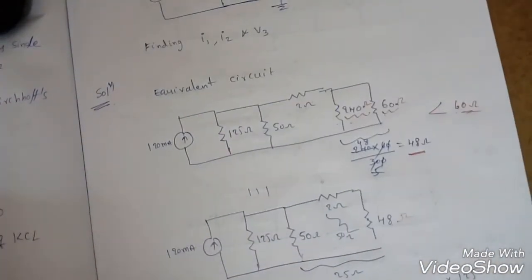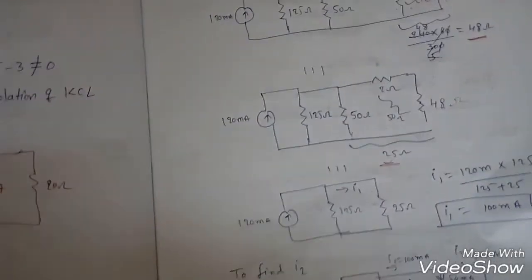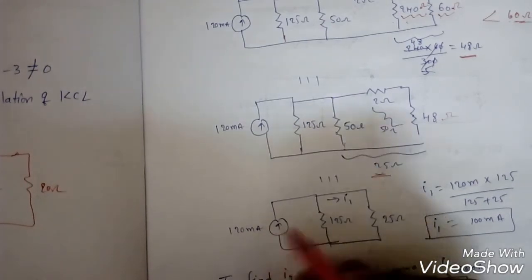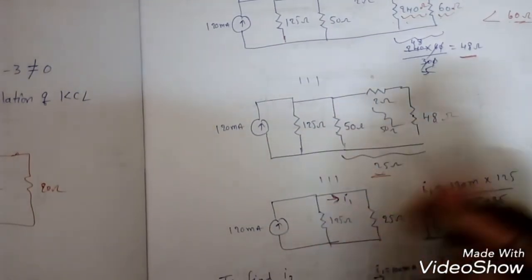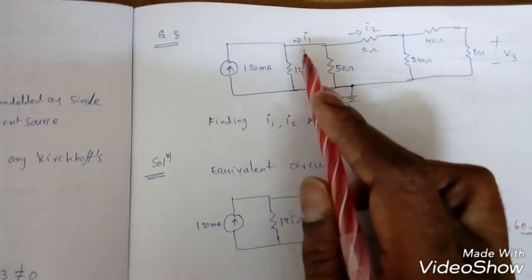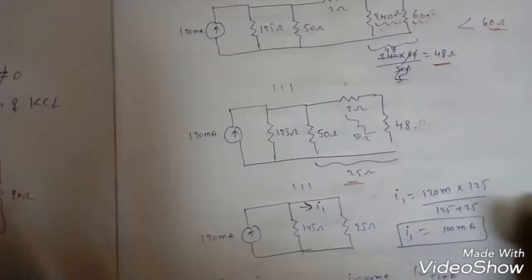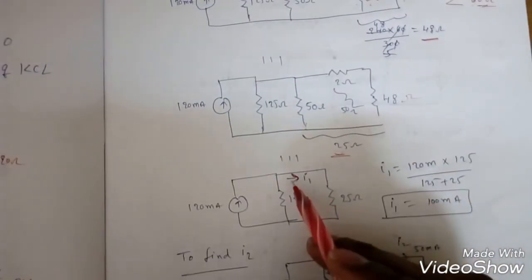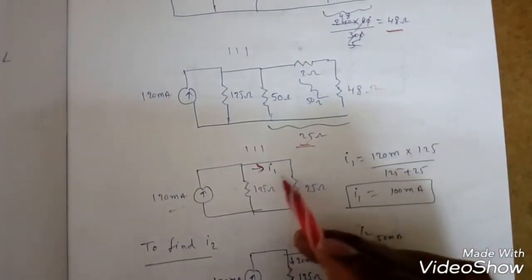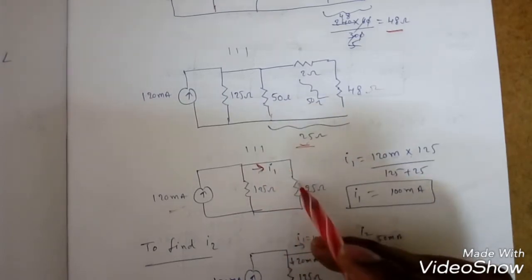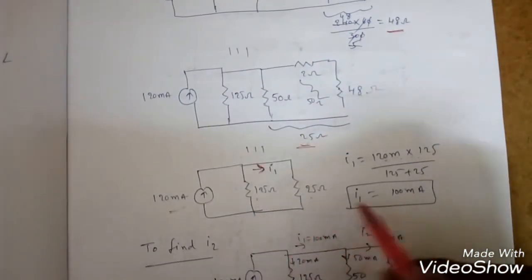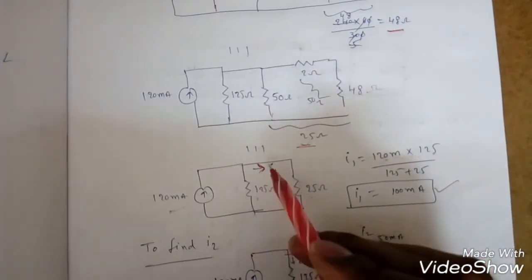The final simplified circuit has 25 ohms and 125 ohms with a main current source of 120 milliamperes. To find I1, we use the current division principle: I1 = 120 mA × (opposite branch resistance 120) / (125 + 25). Wait — I1 = 120 mA × 125 / (125 + 25) = 120 × 125/150 = 100 milliamperes.